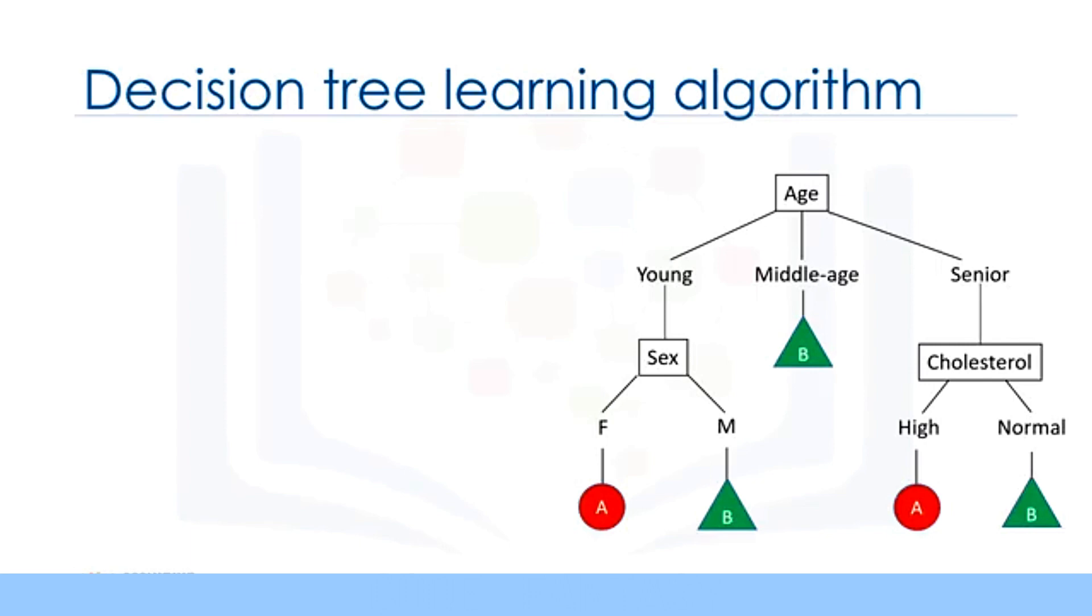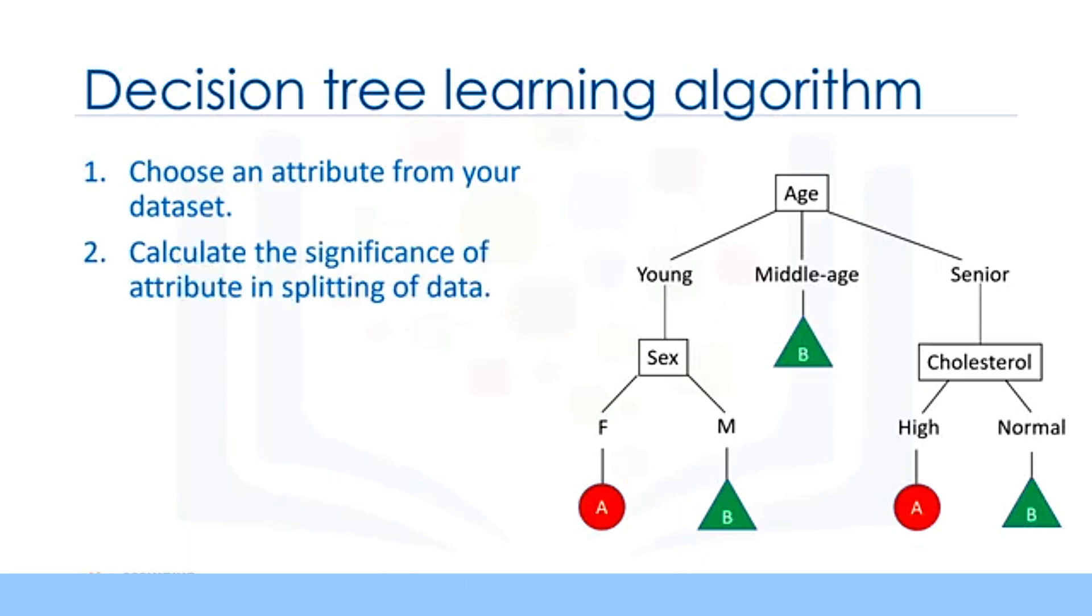Here is the way that a decision tree is built. A decision tree can be constructed by considering the attributes one by one. First, choose an attribute from our dataset. Calculate the significance of the attribute in the splitting of the data. In the next video, we will explain how to calculate the significance of an attribute to see if it's an effective attribute or not. Next, split the data based on the value of the best attribute. Then, go to each branch and repeat it for the rest of the attributes.